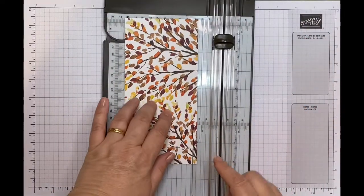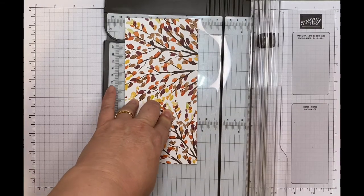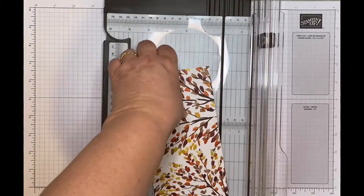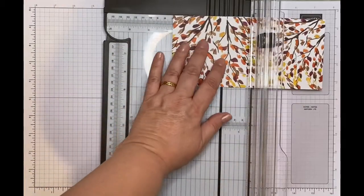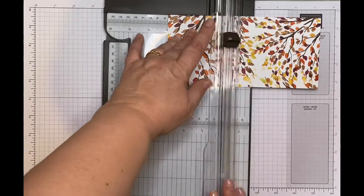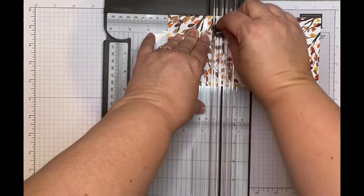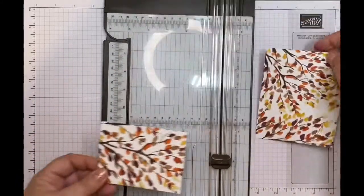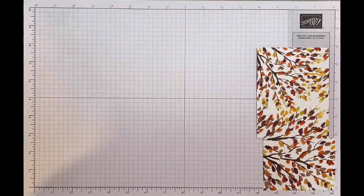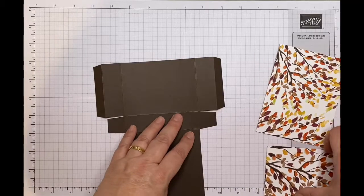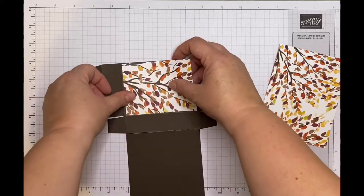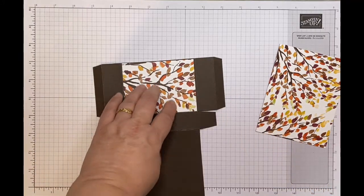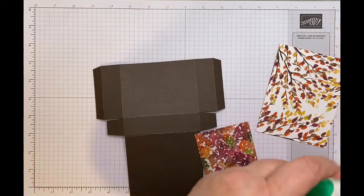I'm going to get my DSP for this panel here. DSP is Beauty of the Earth, and it measures 8 inches by 3 and 7/8. I'm going to cut it on the 8-inch side at 2 and 7/8, just there, and it is going to create like a pattern sort of like that on the box.